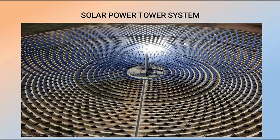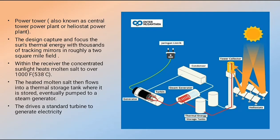The solar power tower system uses thousands of tracking mirrors arranged in an array, each about two square meters. Also known as the central tower plant or heliostat, an array of mirrors focuses sun's radiation onto a receiver tower containing superheated molten salt. The heated salt is pumped through a steam generator, the steam drives a turbine to generate electricity, and the cooled salt is recirculated back through the system.